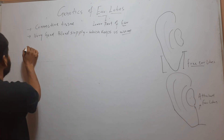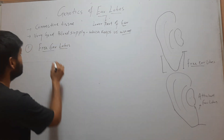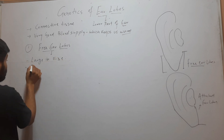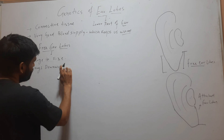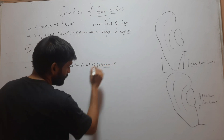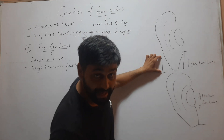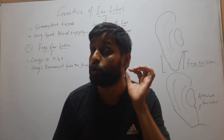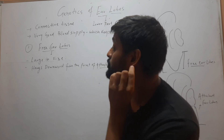These ear lobes are of two types. The first one is free ear lobes. Free ear lobes are large in size and they hang downward from the point of attachment. You can see that this ear lobe is large in size and it hangs downward from the point of attachment. Such ear lobes are called free ear lobes. Look at my ear lobe — it hangs downward from its point of attachment, so I have a free ear lobe.